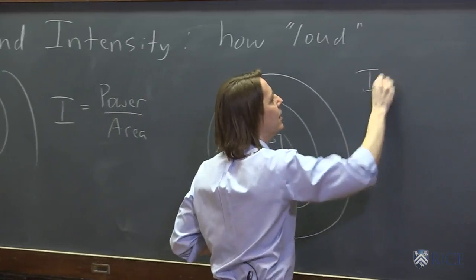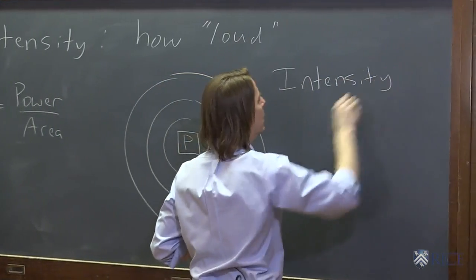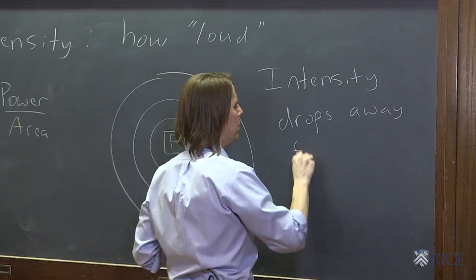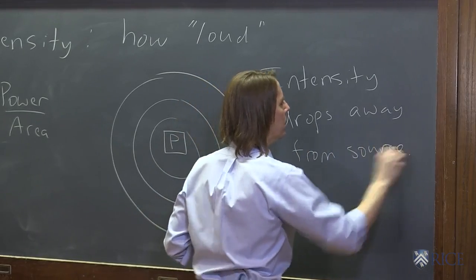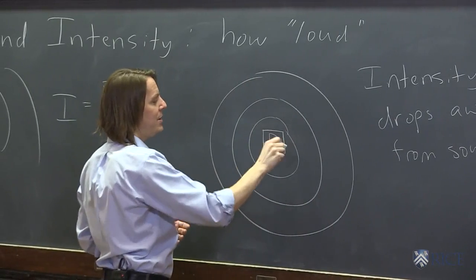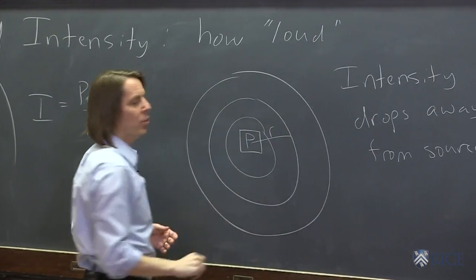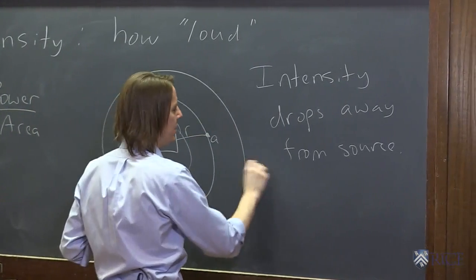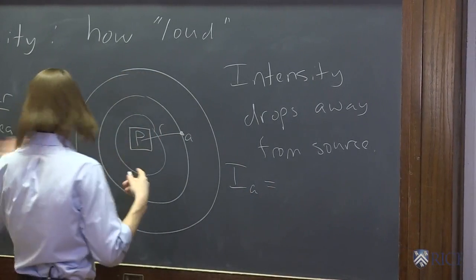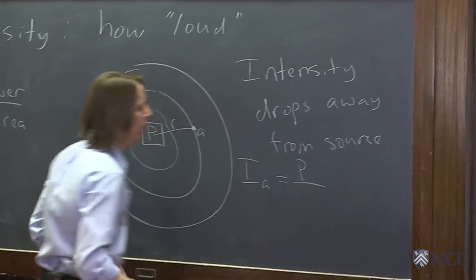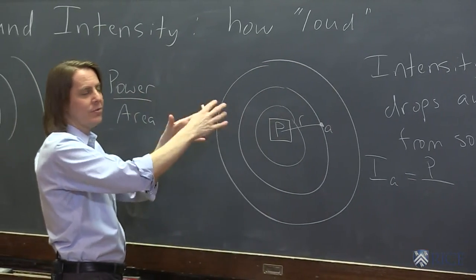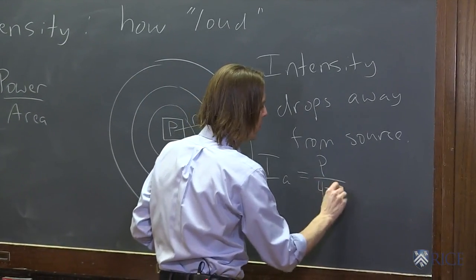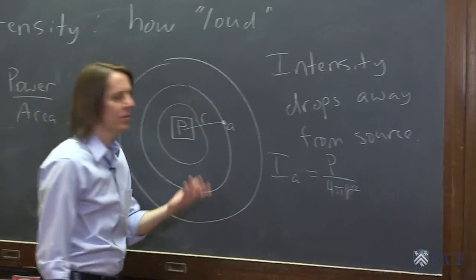drops away from the source. Okay? So if this were putting out a power p, and you went a distance r away, it would be that power per unit area. So here, at point A, the intensity at A would be the power, say, I don't know, 700 watts, over, if it were going out perfectly smooth in a sphere, it would be the area of that sphere. Which is, area of a sphere is 4 pi r squared. 4 pi r squared. So that's how you could calculate the intensity.